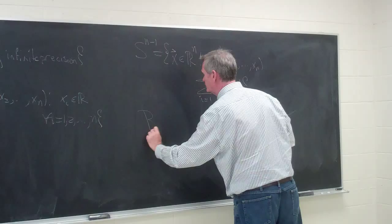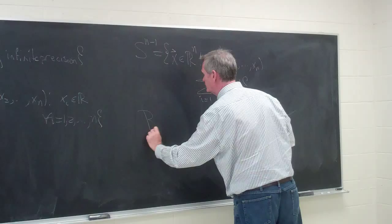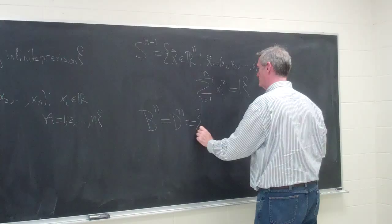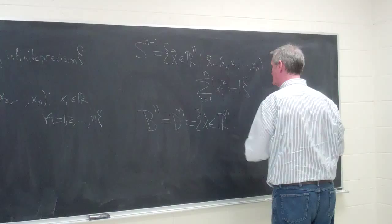And the summation of the xi squared is equal to 1. And then the sphere is the boundary of the n-dimensional ball or the n-dimensional disk. We'll describe explicitly what we mean by boundary later on.